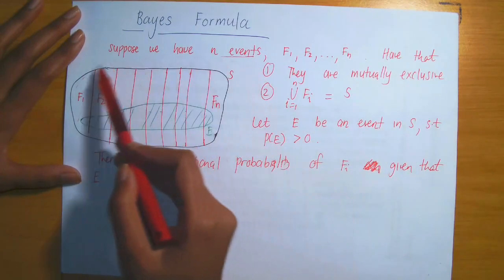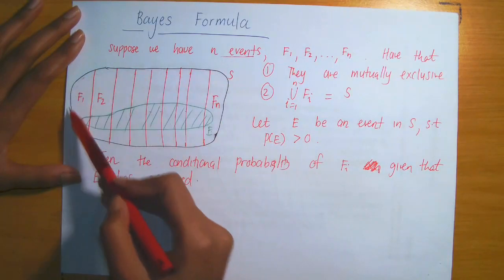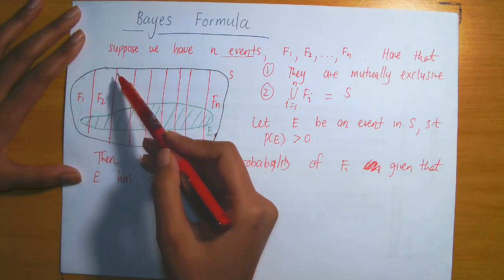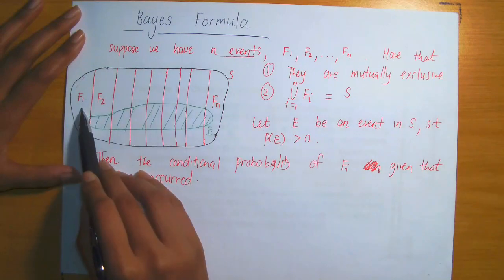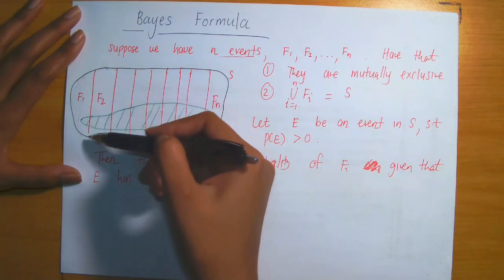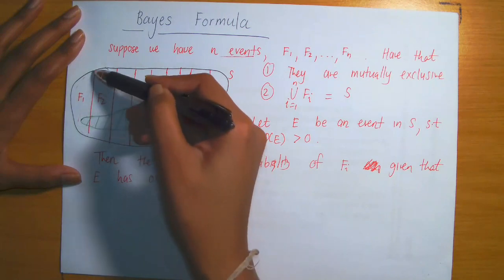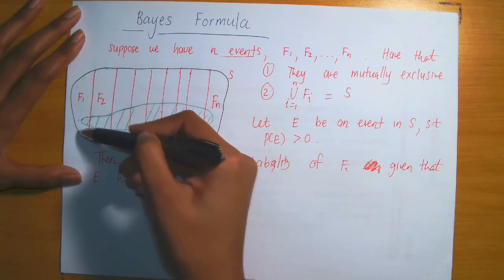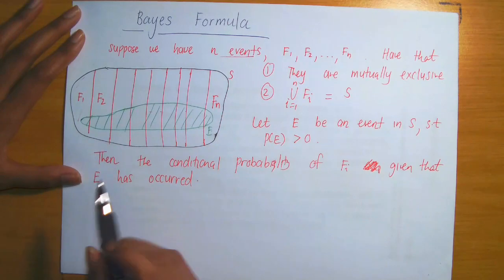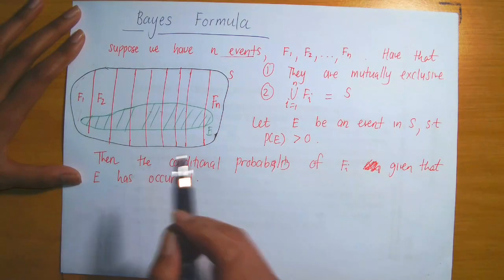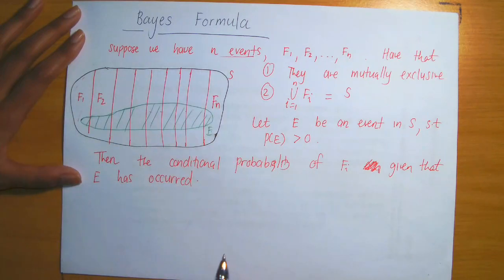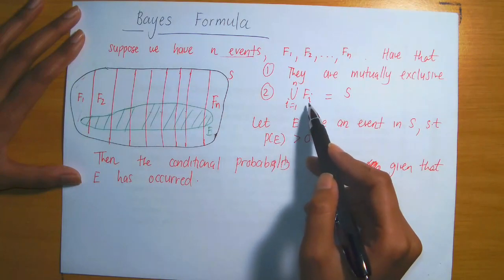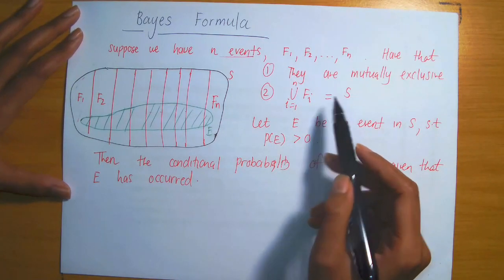Given a sample space S, which I've drawn with a black pen, I have partitioned S to include the events F1 to FN. Using the red pen, I've highlighted event F1 followed by F2, drawn in a manner that preserves the condition that each of these events are mutually exclusive to the other. The second condition is that the union of all N events must equal the sample space.